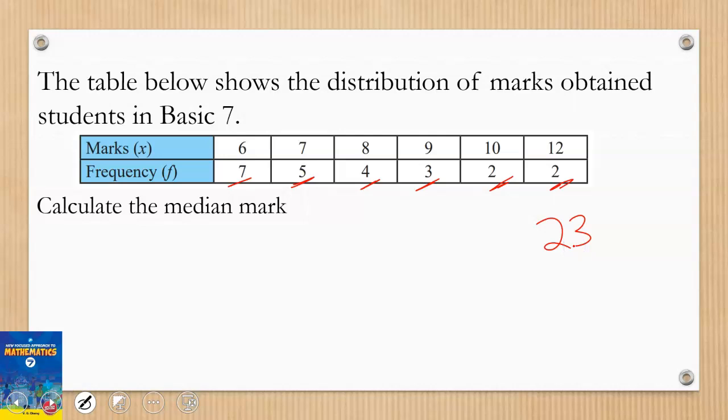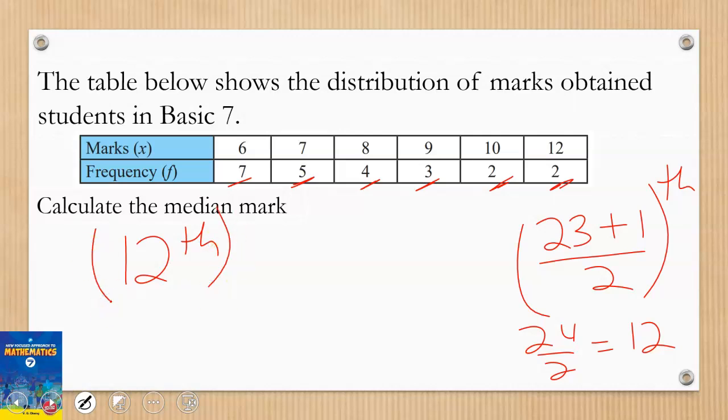Now what you do is, if 23 happens to be your answer and it's an odd number, all we need to do is add 1 to it and divide by 2 to give us the position. Be careful - so when I do this, I have 23 plus 1, which will be 24, divided by 2 gives me 12. So I'm going to have 12 positions. This is not the answer, it is the position where we can find our median.